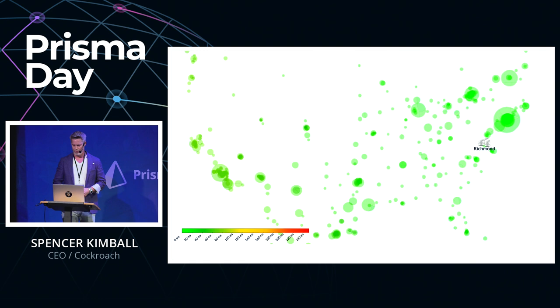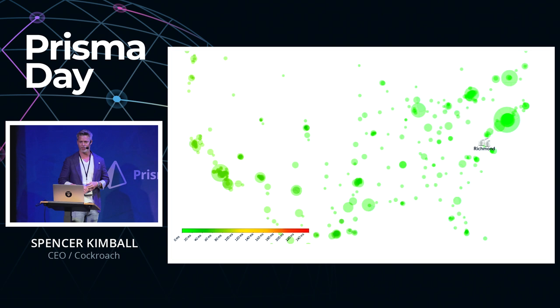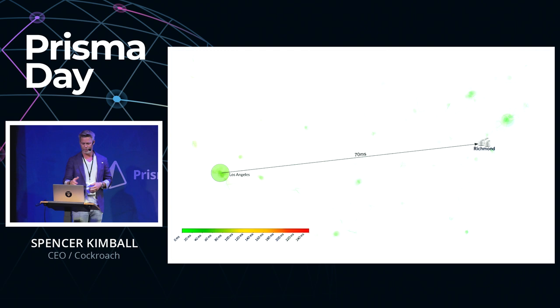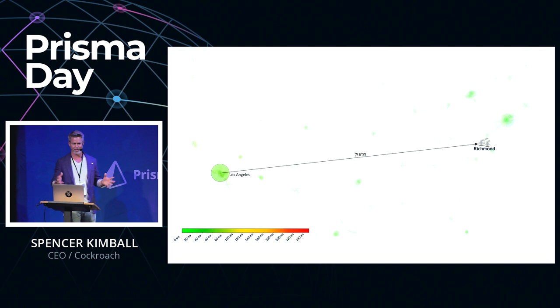To make this more visceral, this map of the United States has all cities with more than 100,000 people marked as circles, where the area indicates population. We have an application tier plus a database deployed in Richmond, Virginia. Even on the West Coast, things aren't trending well — you have about 70 millisecond latency to Richmond. If you're in Los Angeles, that's the minimum service latency. And if you have a REST API with a mobile app making multiple serial calls, that 70 milliseconds can accumulate to multiple seconds.